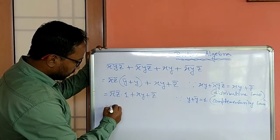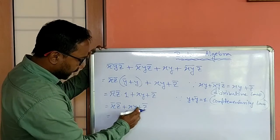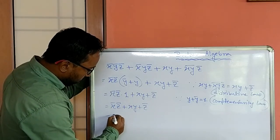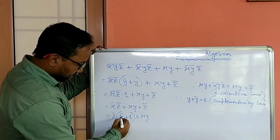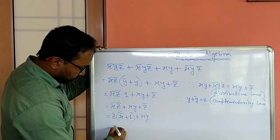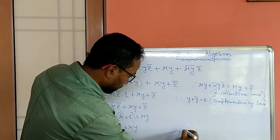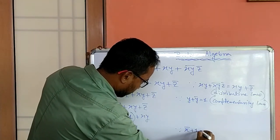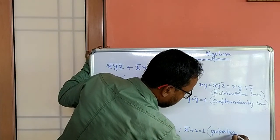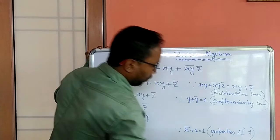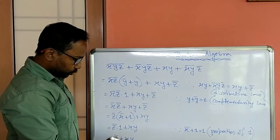Then we are getting x not, z not plus xy plus z not. Now if I take z not from these two terms common, then z not into x not plus 1, and here x not. So again x not plus 1 equals 1. So z not into 1 plus xy. So here also we have to write the law: x not plus 1 equal to 1, that is properties of 1.